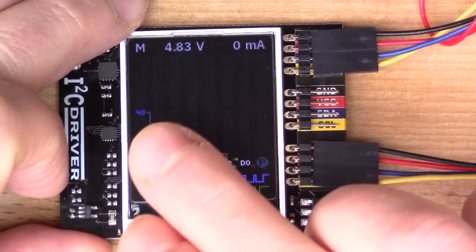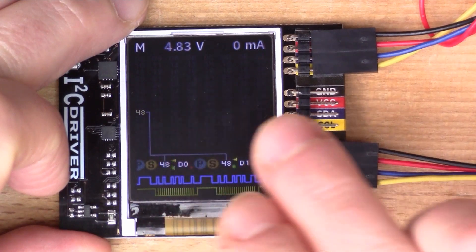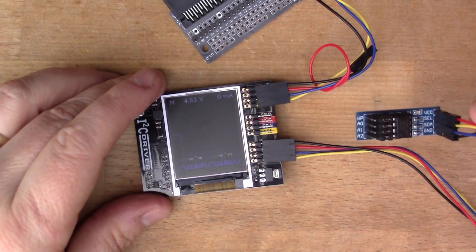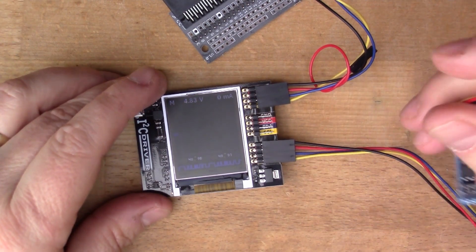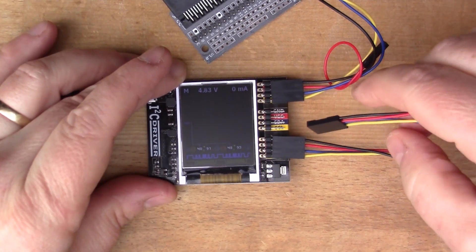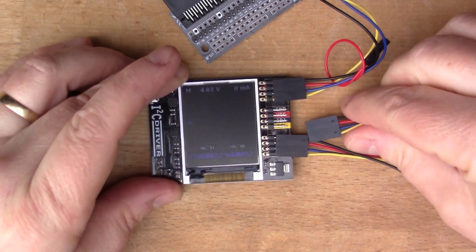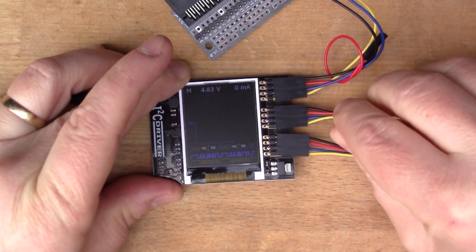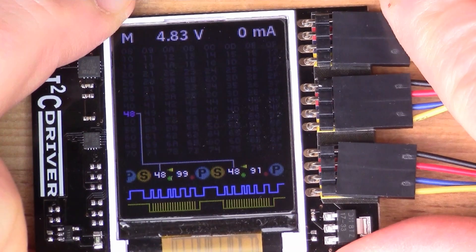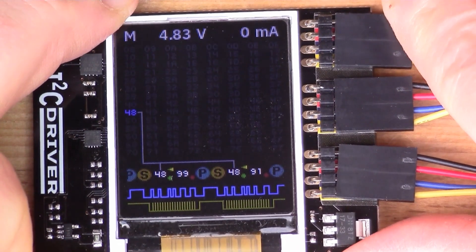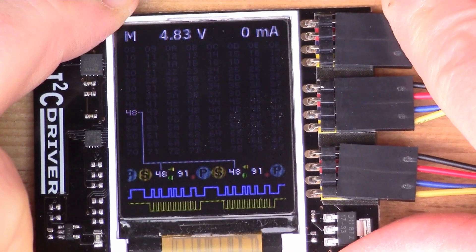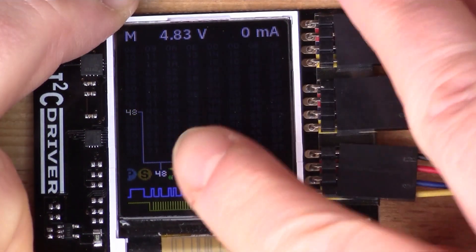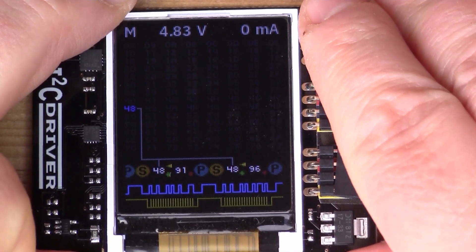I'm wondering if I plug in another device if it will show up on the screen. Let's try the EEPROM. It's not been detected, but my program doesn't read port 50, so maybe that's why it doesn't actually show up on the display.